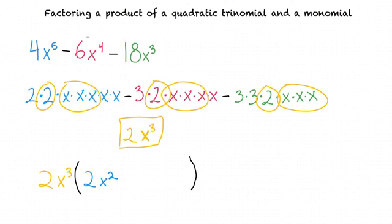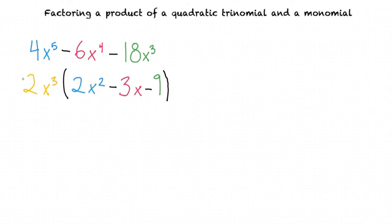6x to the fourth power divided by 2x cubed is 3x, and 18x cubed divided by 2x cubed is 9. So now we have rewritten this as 2x cubed times 2x squared minus 3x minus 9. Our final step to continue factoring this is to factor this second part that's left, which is a regular quadratic equation.